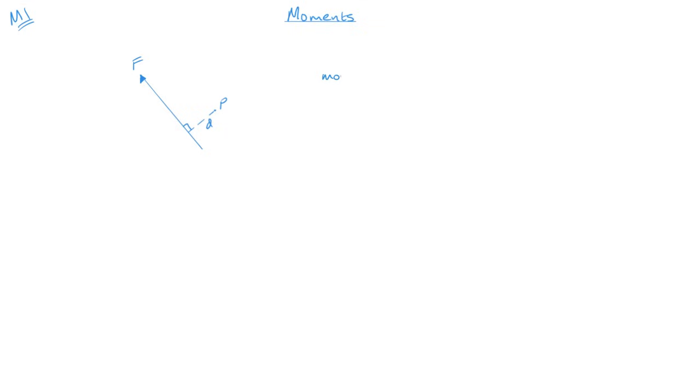So the moment of F is going to be equal to the magnitude of F times that perpendicular distance. And this particular moment is going to be acting clockwise, because if you think there's the point P that this is acting around, it's going to take it going around this direction clockwise.